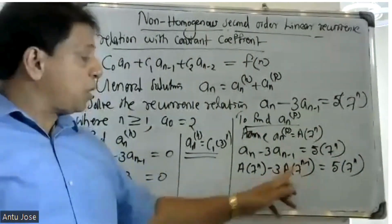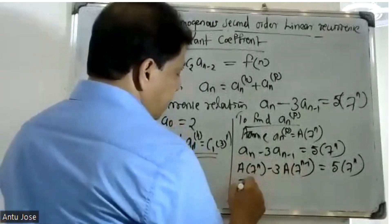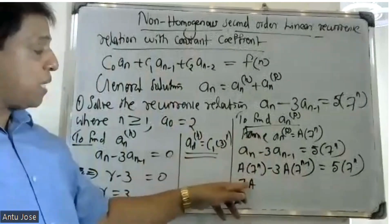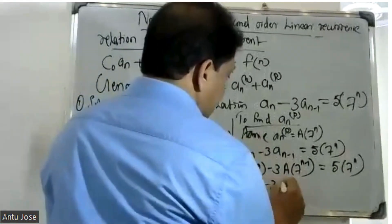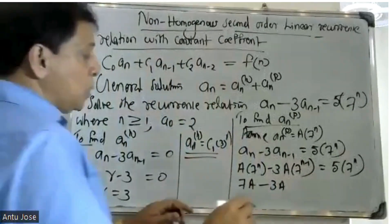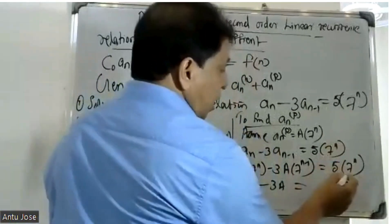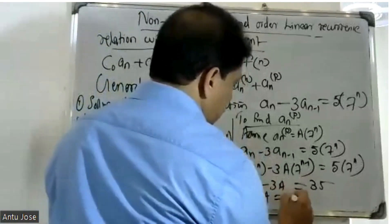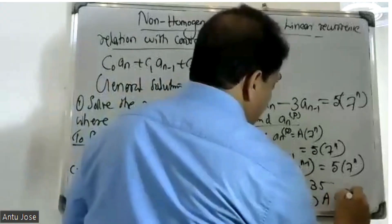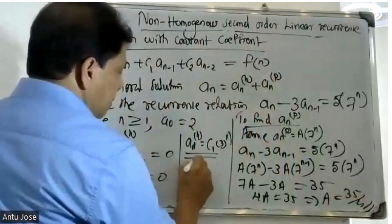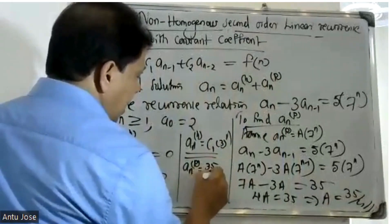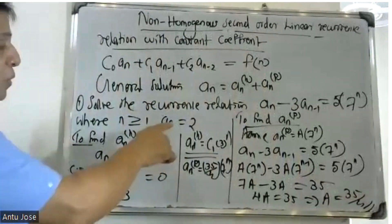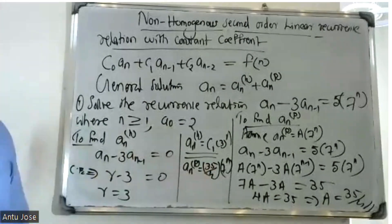Simplifying: A·7^n minus 3·A·7^{n-1} equals 5·7^n. Factor out 7^{n-1}: A·7^{n-1}(7 minus 3) equals 5·7^n. This gives 4A equals 35, so A equals 35 divided by 4.